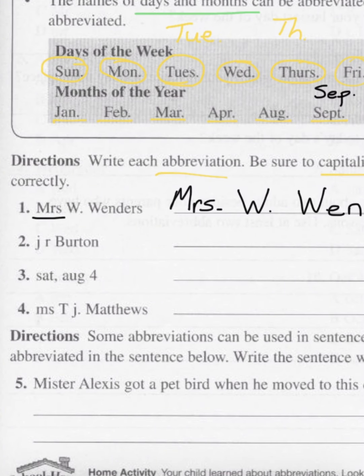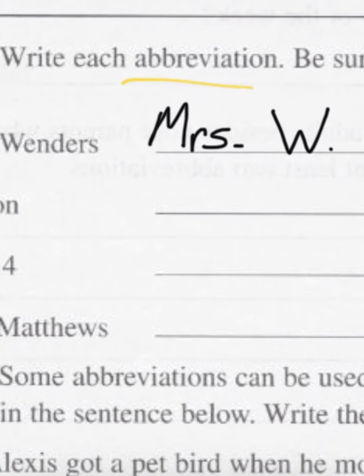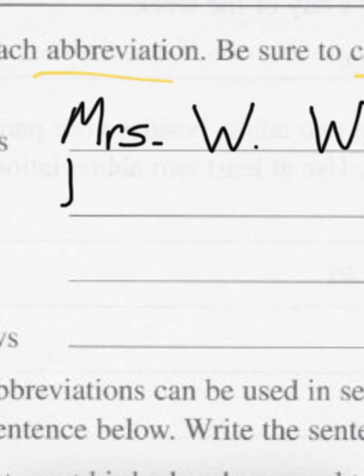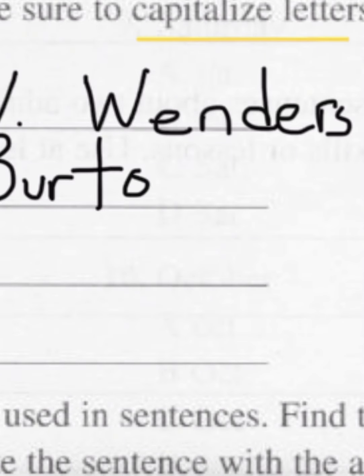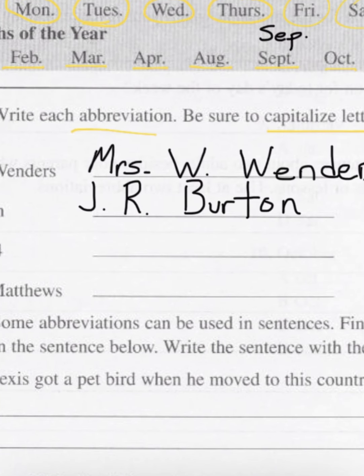Number two: J.R. Burton — there are four mistakes here. Capital J and a period after that first initial. Capital R and a period. And then Burton — that part was correct. So it should be capital J period, capital R period, Burton.